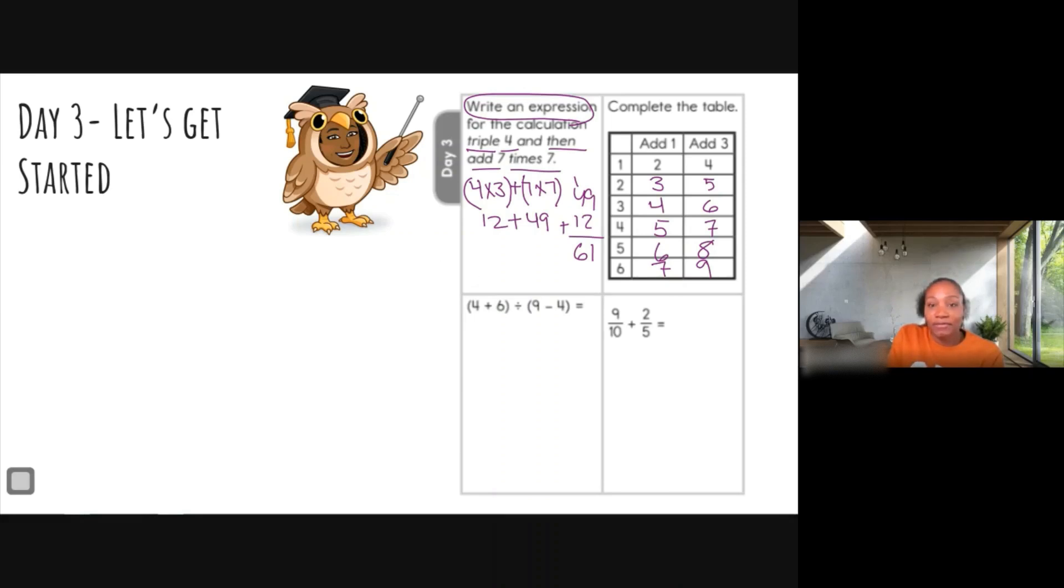Here we go, number three. All right, so this problem looks exactly like the one we did for number one. Do you remember PEMDAS? I'm just going to write PEMDAS. Remember that stands for parentheses, exponents, multiplication, division, addition, and subtraction. So we're going to do what comes first. We have parentheses, so we need to do what is in the parentheses first. So four plus six is, what do you get?